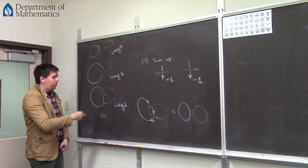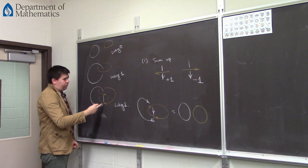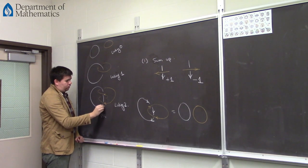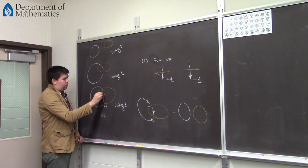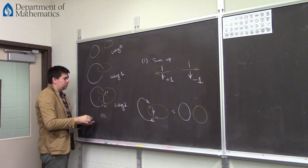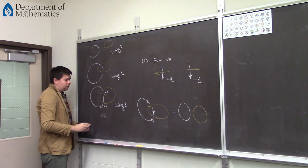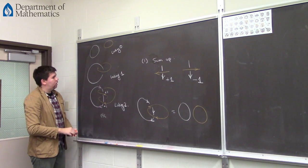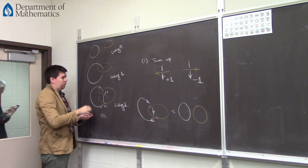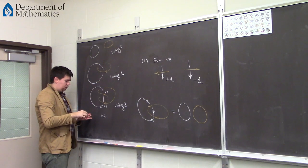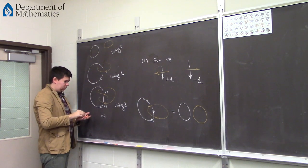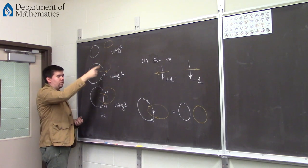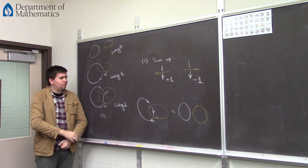So you can go and count. Here I get a plus one, and here I get a plus one, assuming that this is oriented like this. So I get a linking number of two. Here, if I orient like this, I get a linking number of just plus one. And here I still have a linking number of zero. So this seems to be the right thing.